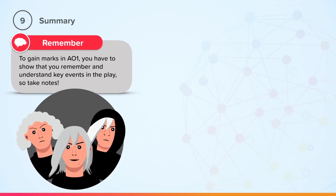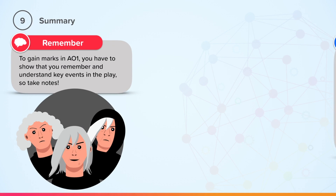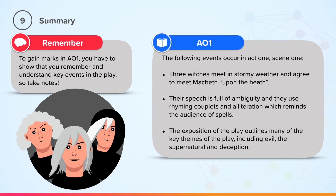Remember, to gain marks in AO1, you have to show that you remember and understand key events in the play. So take notes. The following events occur in Act 1, Scene 1: three witches meet in stormy weather and agree to meet Macbeth upon the heath. Their speech is full of ambiguity, and they use rhyming couplets and alliteration, which reminds the audience of spells. The exposition of the play outlines many of the key themes, including evil, the supernatural, and deception.